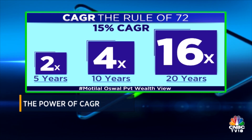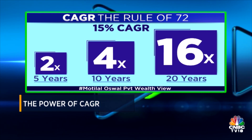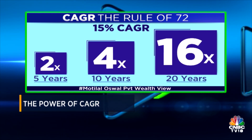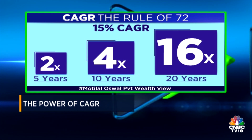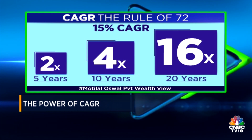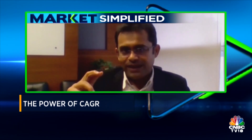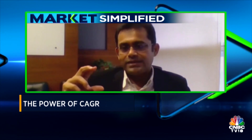But in 10 years, your investment doesn't become three times — it becomes four times. And in 20 years, it becomes 16 times. So that's the power of CAGR, and that's the power of Compounded Annual Growth Rate.